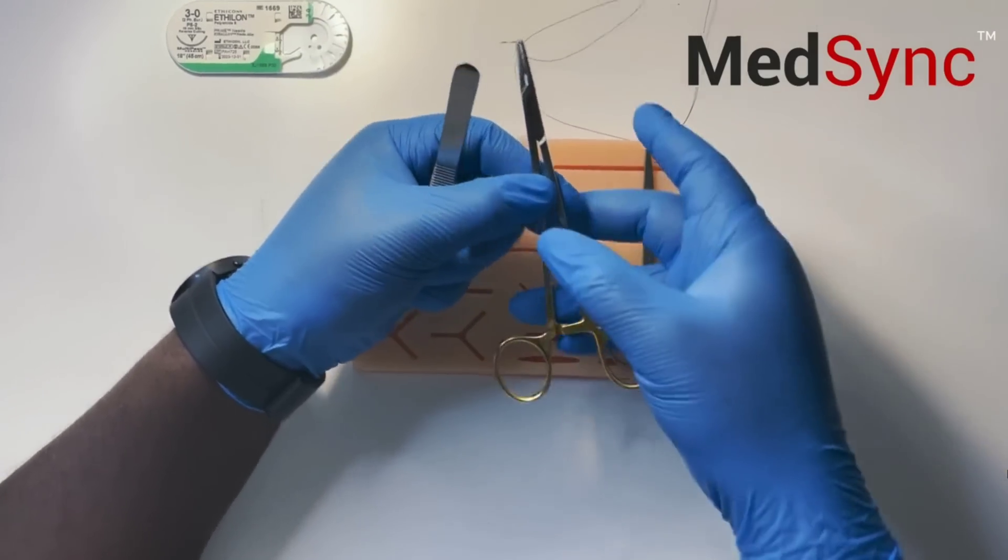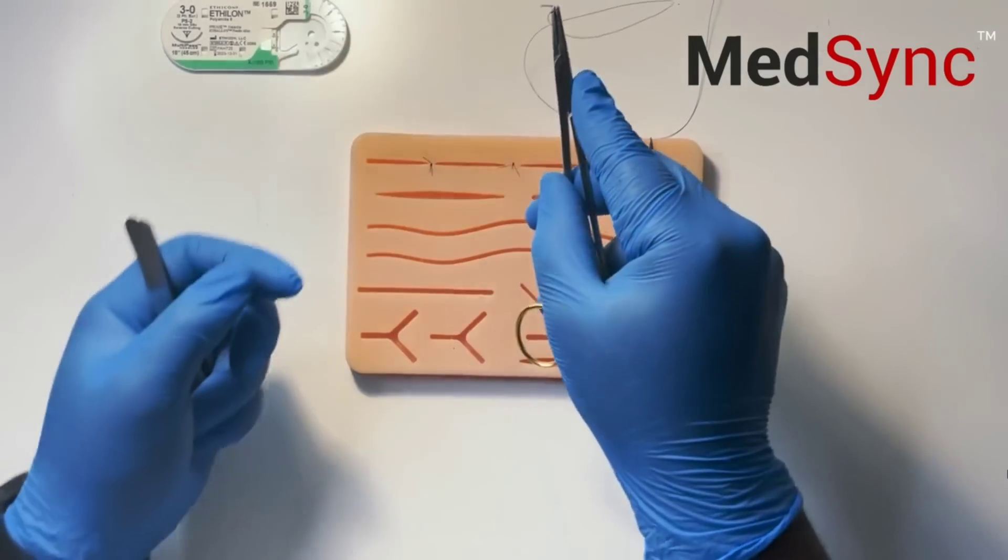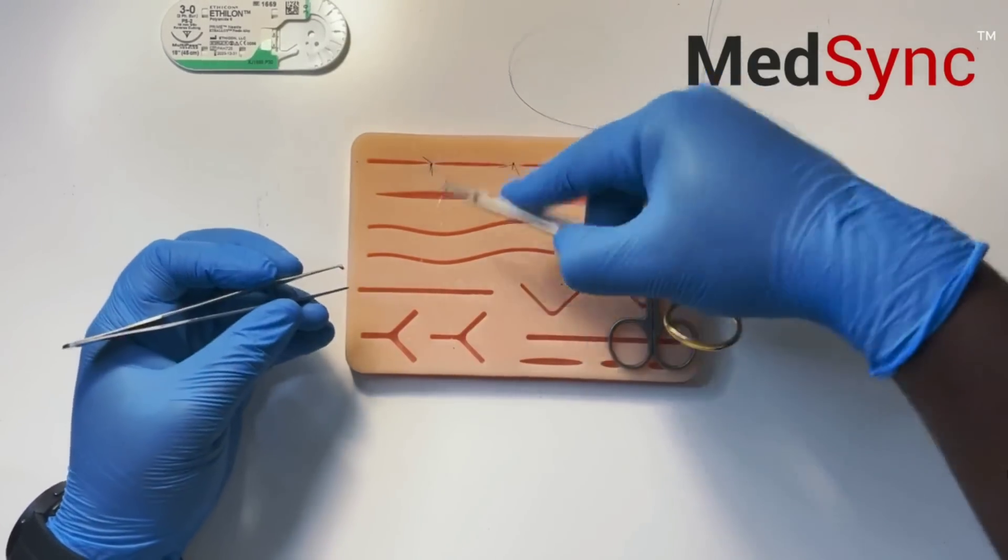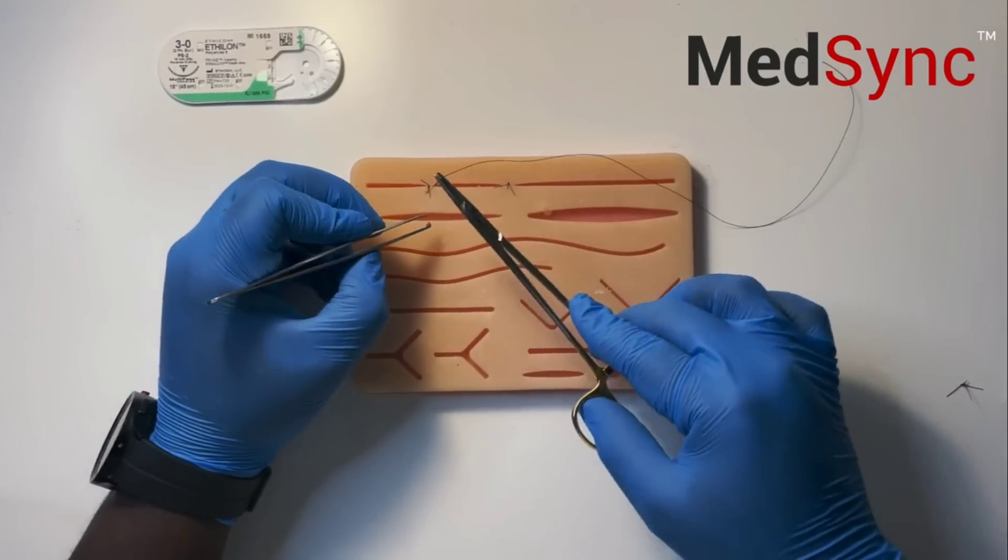The second way is to palm your needle holder. This allows you to suture at depth. Let me show you when this is useful.